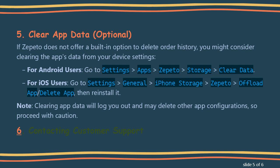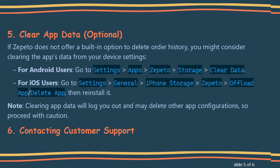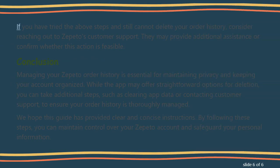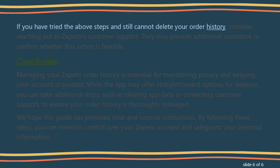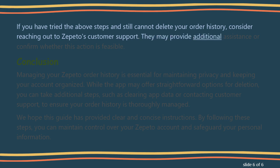Step 6: Contacting Customer Support. If you have tried the above steps and still cannot delete your order history, consider reaching out to Zepetto's customer support. They may provide additional assistance or confirm whether this action is feasible.